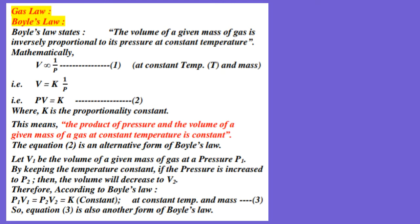This equation can be written as V equal to K times 1 by P. When we replace the proportionality sign with an equals sign, we have to multiply by a constant. Here, that constant is K. So, K is the proportionality constant. Again, this equation can be simplified as PV equal to K. This equation 2 means that the product of the pressure and the volume of a given mass of gas at constant temperature is constant.